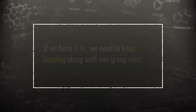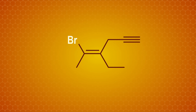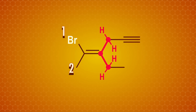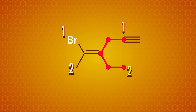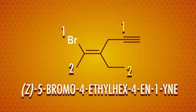Assigning priorities isn't always so easy, so if we have a tie, we need to keep hopping along until one group wins. For example, in this molecule, the left-hand carbon of the double bond is straightforward — bromine wins priority over the methyl group. But on the right-hand carbon, the first position gives us the same thing: a carbon with two hydrogens attached — a tie. So we have to keep going and compare the next two atoms. The triple bonded carbon wins priority because it's like three carbons at once compared to one carbon on the other side. Now we can see our priority winners are on the same side, so it's a Z isomer: Z-5-bromo-4-ethyl-hex-4-en-1-yne.